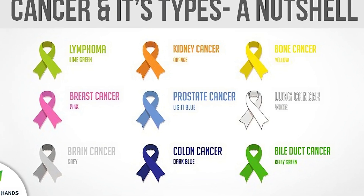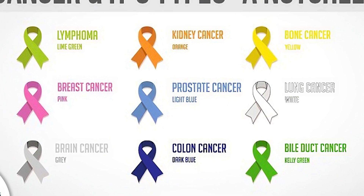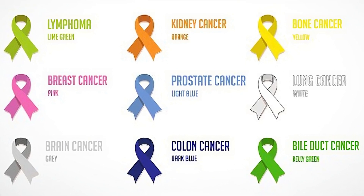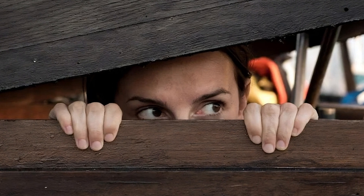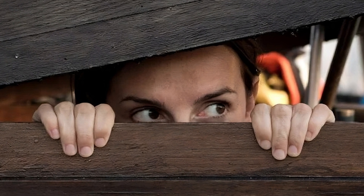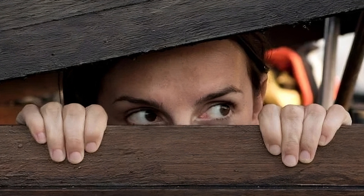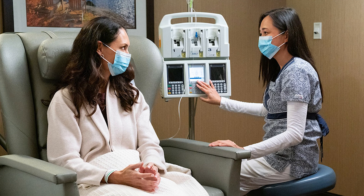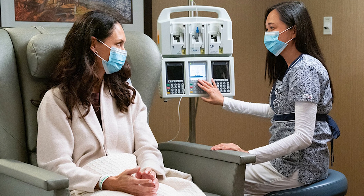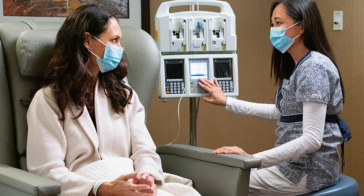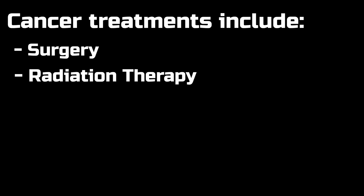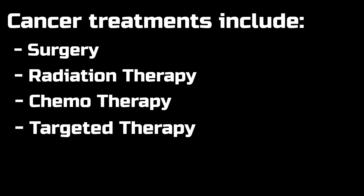Cancer is a complex disease with many different types and subtypes. Cancer cells can evolve and mutate over time, making it difficult to develop long-term effective treatments. Additionally, cancer cells can hide from the body's immune system, making it challenging to develop therapies that can effectively target and eliminate these cells. While we still have no definitive cure for cancer, we have come a long way. Appropriate treatment depends on factors such as the type and stage of the cancer, as well as the patient's overall health and preferences. Cancer treatments include surgery, radiation therapy, chemotherapy, targeted therapy, and immunotherapy.